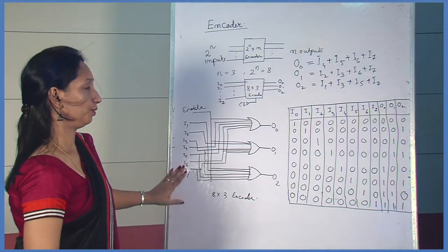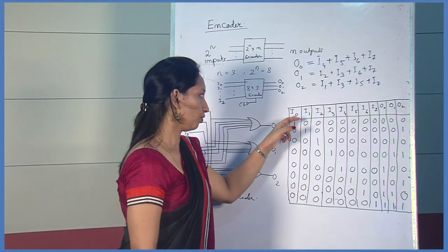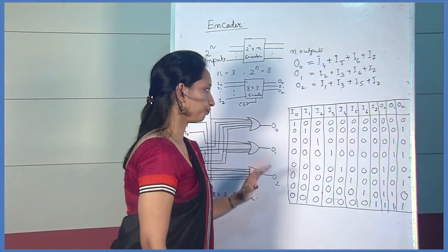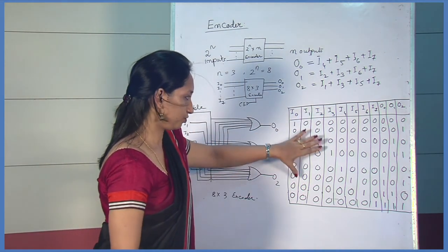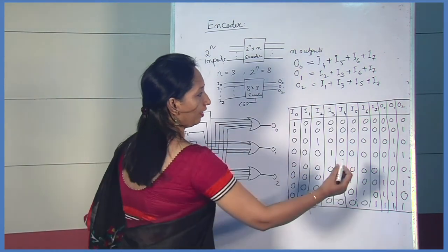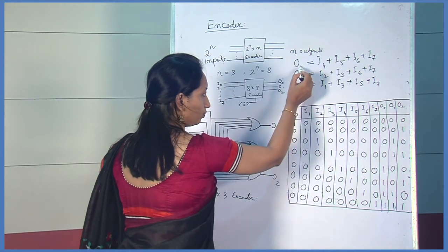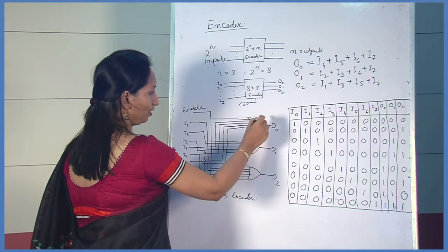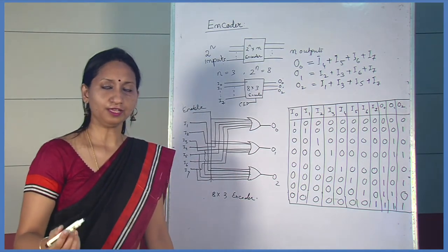I think it is clear now. To summarize: first, draw the truth table for the 8-to-3 encoder with 8 inputs I0 through I7 and 3 outputs O0, O1, O2. At a time, only one input is assumed to be high. From the truth table, when each output is 1, we check which inputs are high, combine them, and derive the three output equations. This gives us the logic diagram of the 8-to-3 encoder. Next, we will see the decoder circuit.